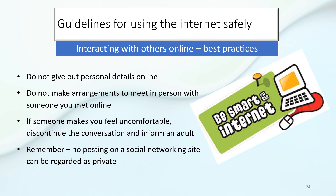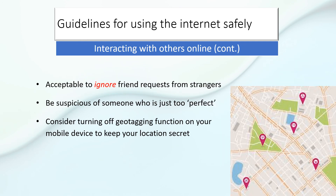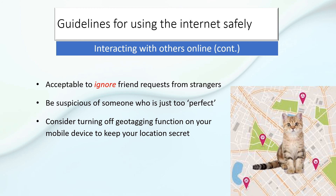Best practices for interacting with others online: do not give out personal details online; do not make arrangements to meet in person with someone you met online, as it can be dangerous because you don't know if that person is really who they say they are. If someone makes you feel uncomfortable, discontinue the conversation and inform an adult. Remember, no posting on a social networking site can be regarded as private — if you wouldn't post it on a billboard by the side of the highway, don't post it on a social networking site. It is acceptable to ignore friend requests from strangers. Be suspicious of someone who seems too perfect — it's probably a fake persona. Consider turning off the geotagging function on your mobile device to keep your location secret.